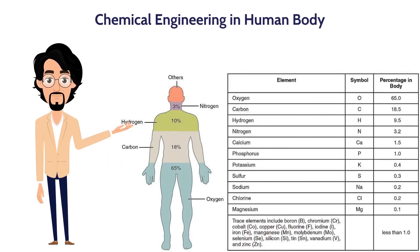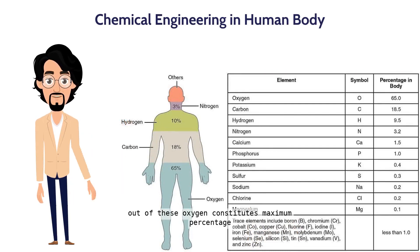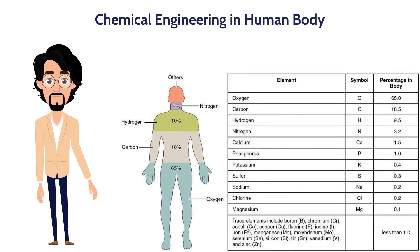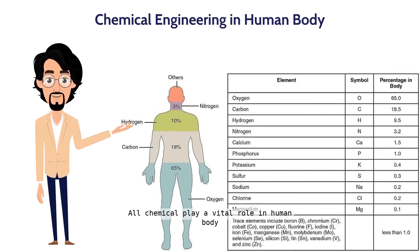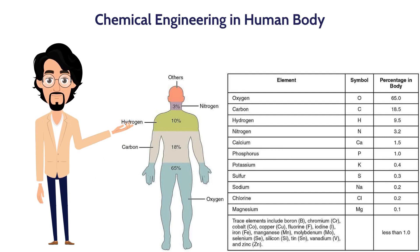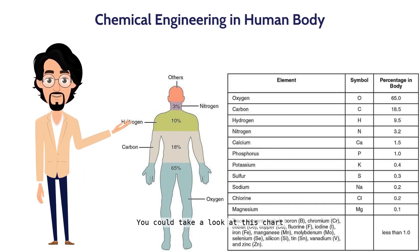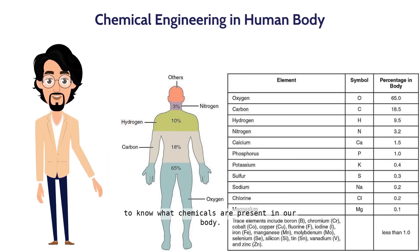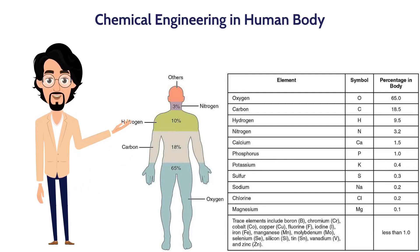Oxygen, carbon, hydrogen, and nitrogen are the primary chemicals present in the human body. Out of these, oxygen constitutes the maximum percentage. All chemicals play a vital role in the human body and are required to keep the body running. You could take a look at this chart to know what chemicals are present in our body.